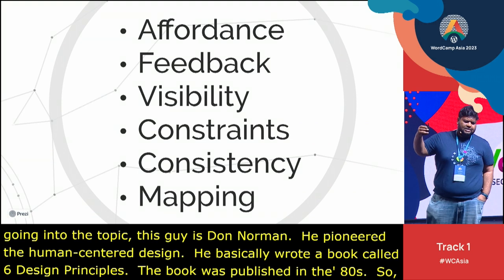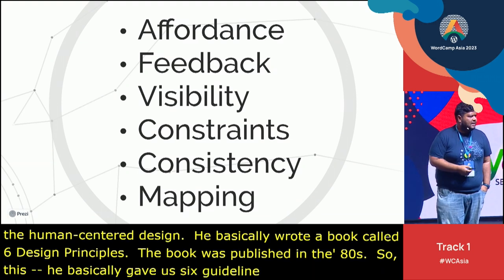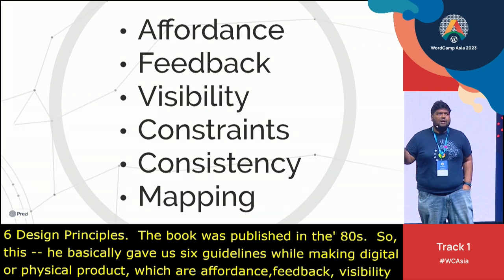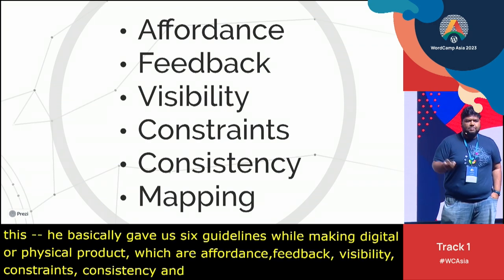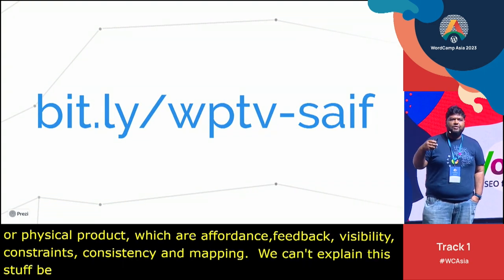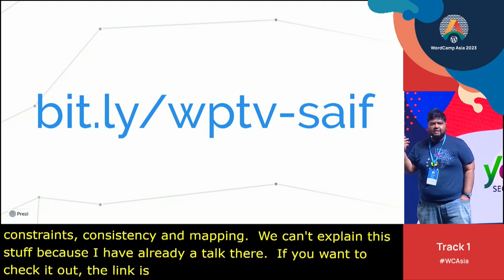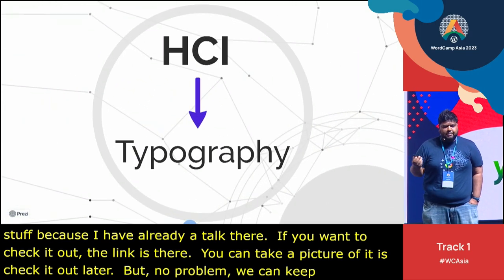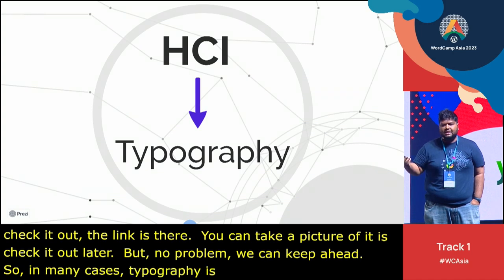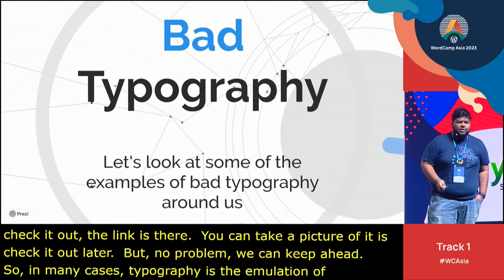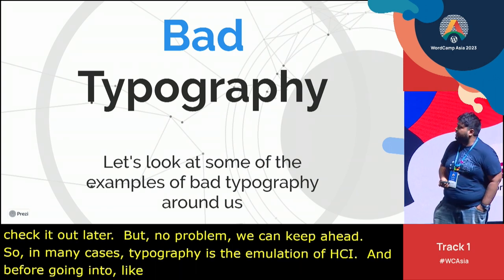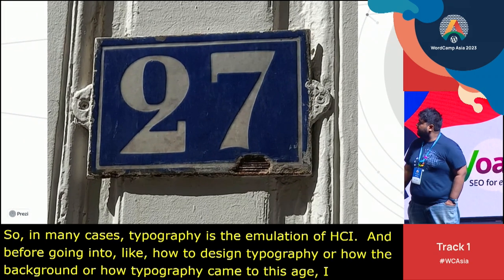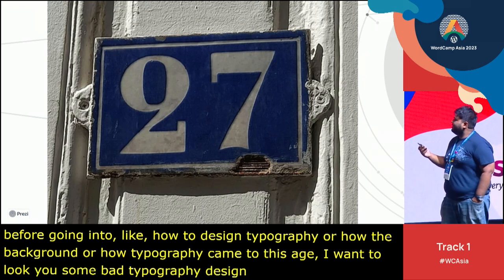He gave us six guidelines while making digital or physical products: affordance, feedback, visibility, constraints, consistency, and mapping. These are all elaborate topics, but we can't go into them here — I have a talk on that you can check out later. In many cases, typography is an evolution and subpart of HCI. Before going into how to design good typography or its background and history, I want to show you some bad typography designs.